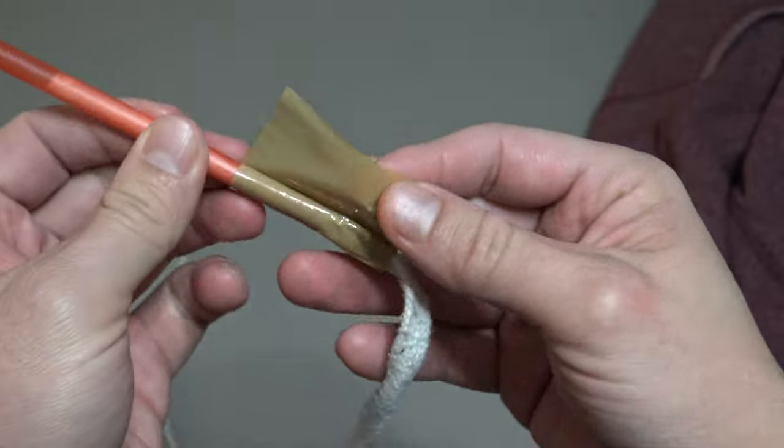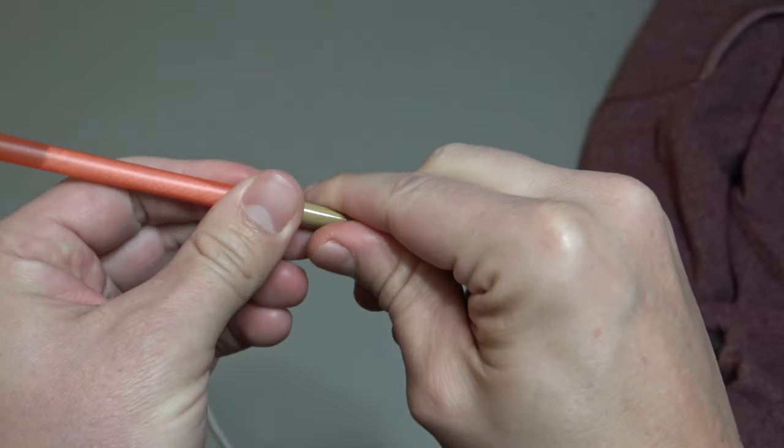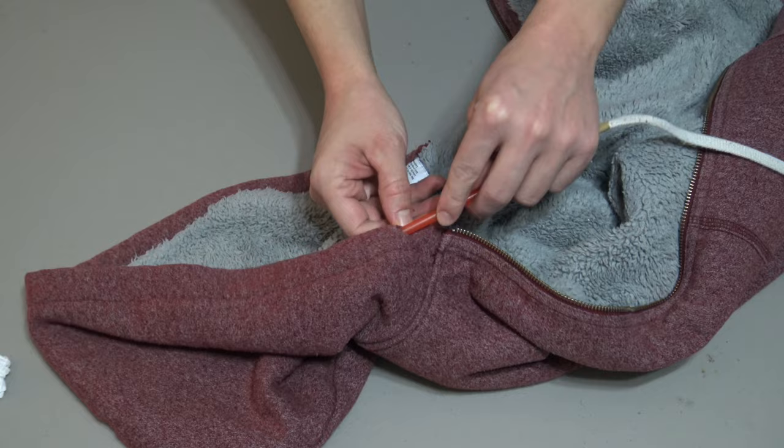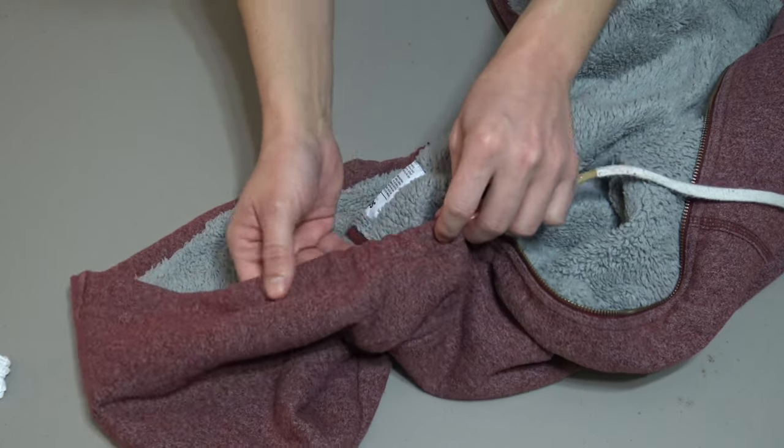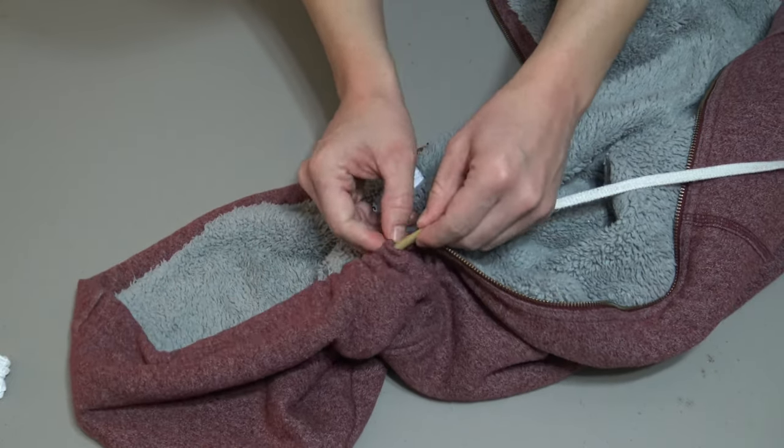From this point, all you're going to do is thread the straw through the hole and around the hood. Just keep feeding that straw until it pops out the other side.